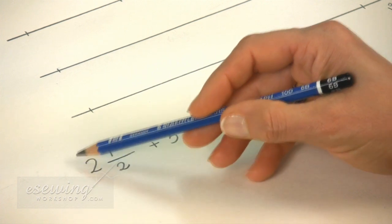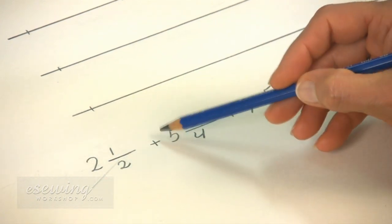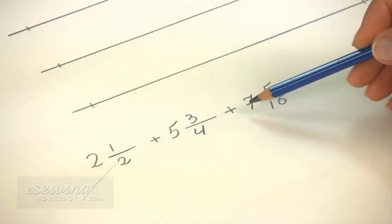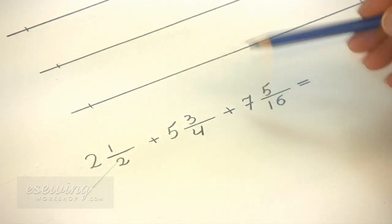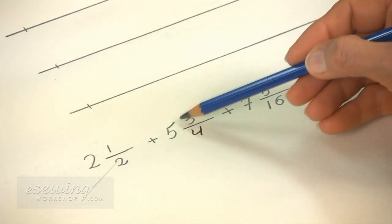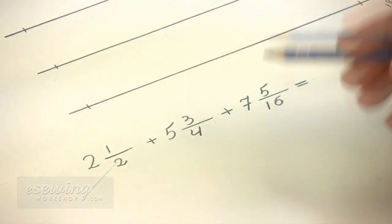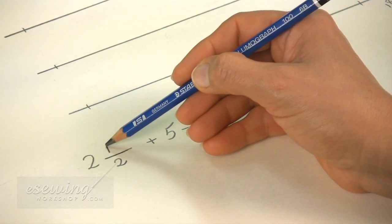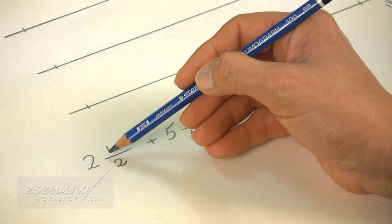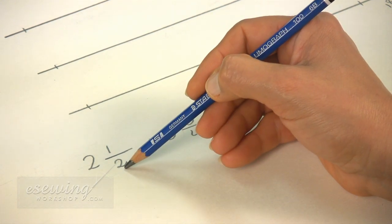2, 5, and 7 are the whole numbers. And these are the fractions. The number above the fraction line is the numerator and below the line is the denominator.